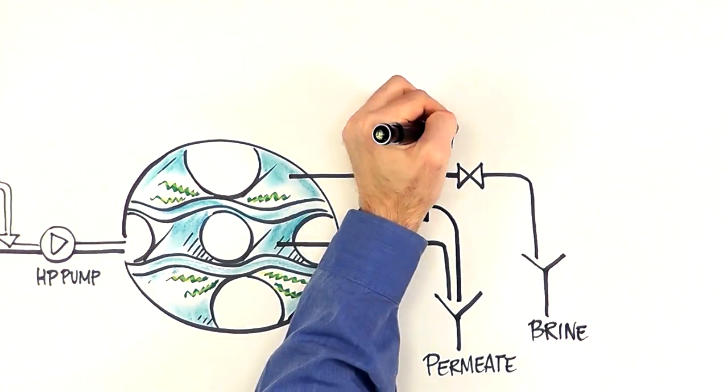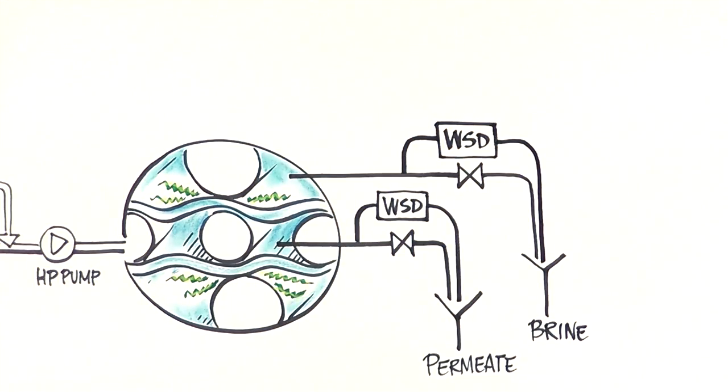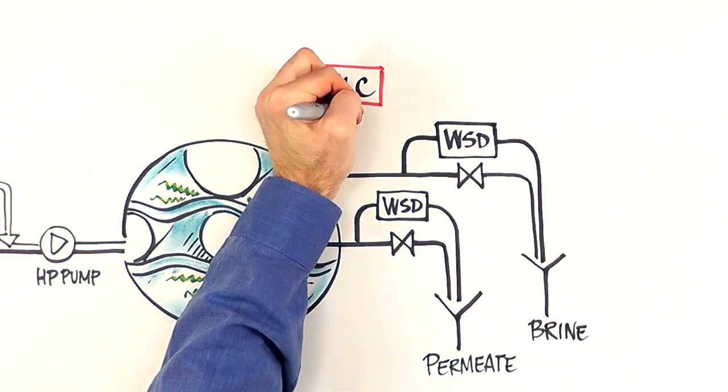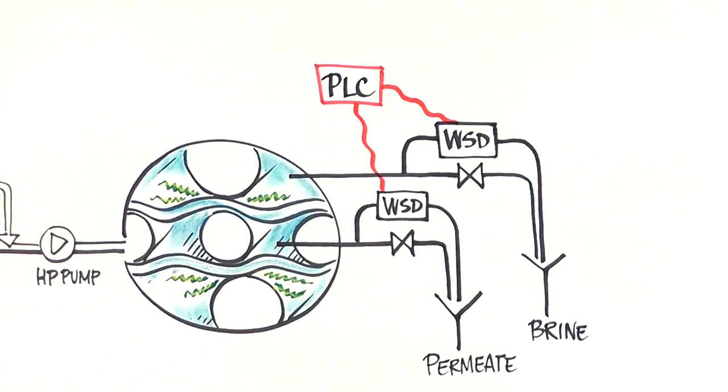Depending on the RO train configuration, the water stroke device can be installed on either the reject stream or the permeate stream, sometimes on both. Operation of the water stroke device is controlled and synchronized by PLC.